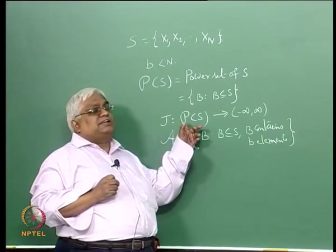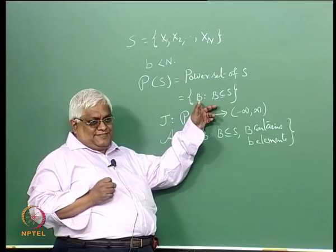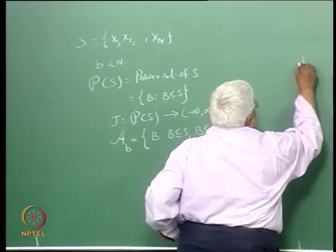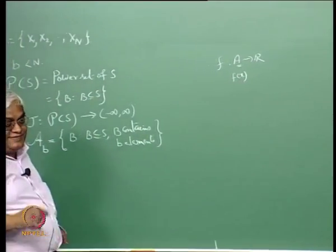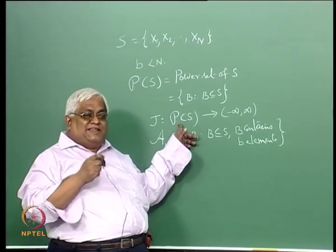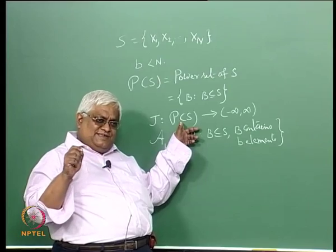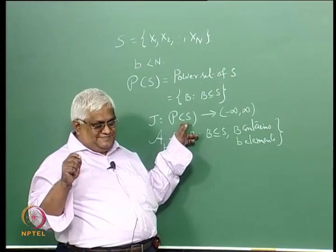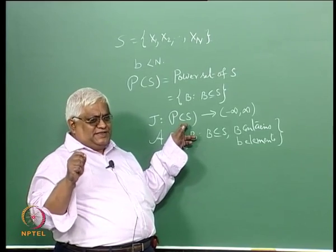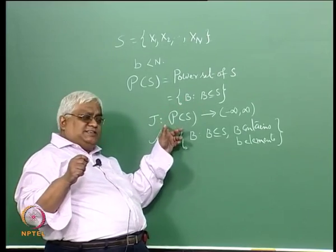J assigns a value to every subset. P of S contains all possible subsets. When we say that f is a function from A to R, we take an element here and calculate f of x, and an element here is a set. So J is a function that takes P of S as an input and gives some value — for every element of P of S it gives an output. An element of P of S is a subset B.